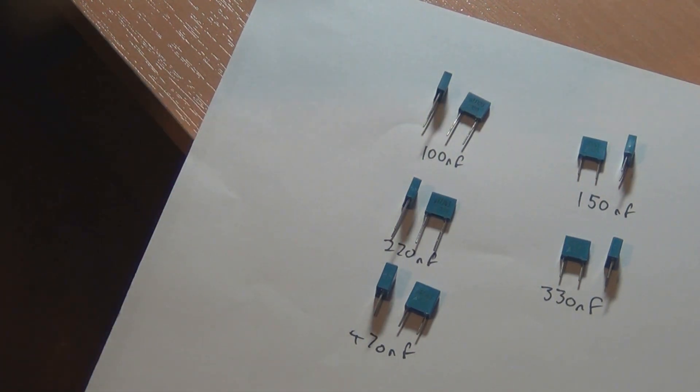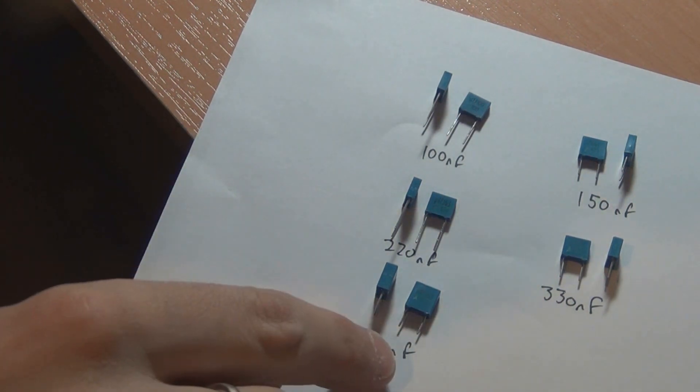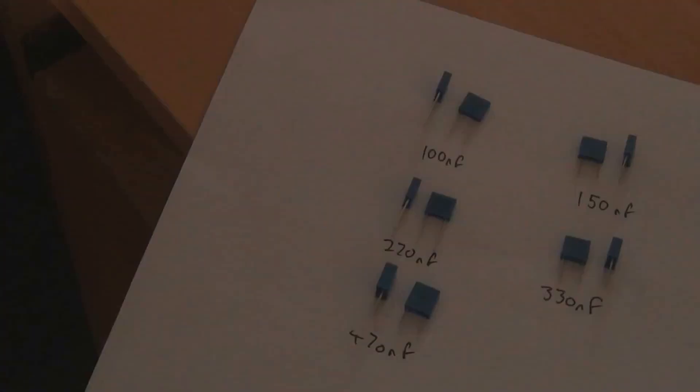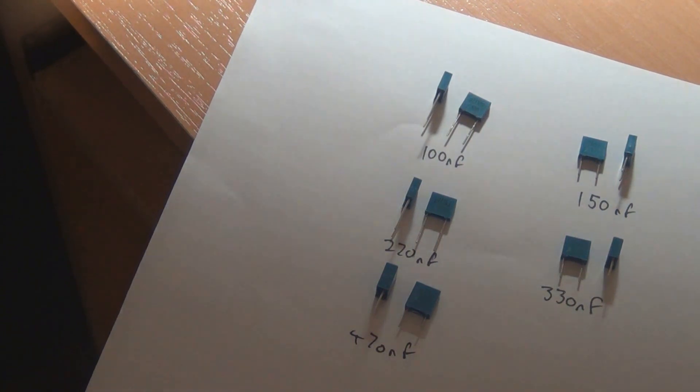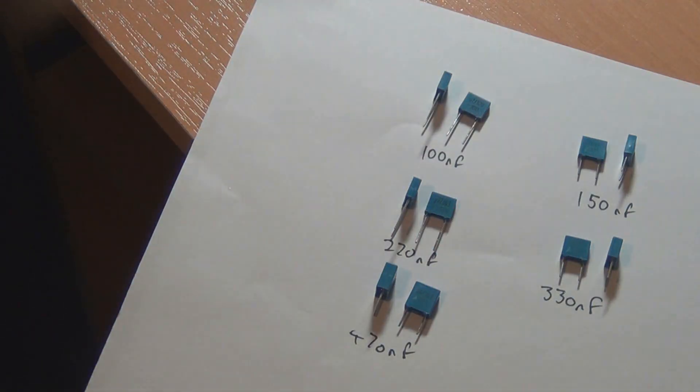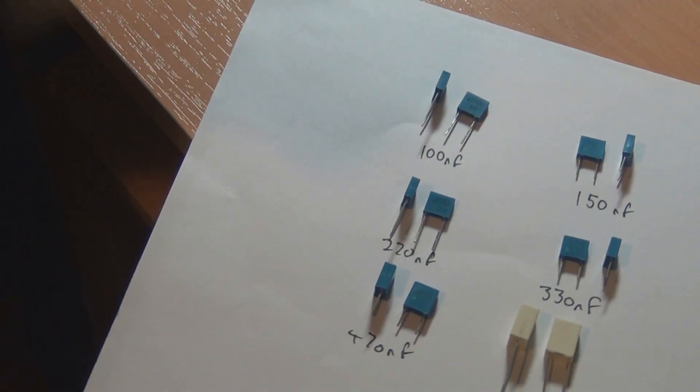But the spacing hasn't changed at all, so you can see that the lead spacing is still 5 mil on all of these capacitors. I should also show you, this is a 1 microfarad Kemet capacitor. So you're getting up the high end I guess you could say. Obviously you can get bigger than 1 microfarad, but just as an example of how big they can get, that's a 1 microfarad.